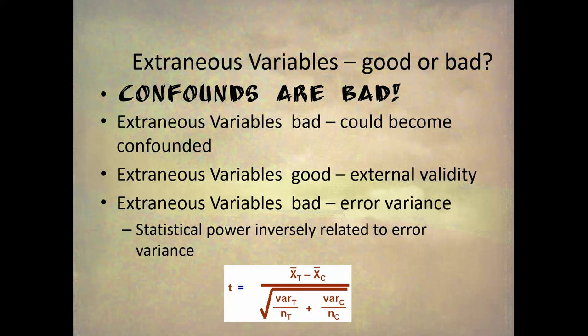One way to reduce error variance is getting rid of extraneous variables. I was running males and females in my experiment, so I dropped males and just had females, getting rid of gender as an extraneous variable. That made the population less diverse but reduced error variance, allowing me to find a statistical relationship. So extraneous variables cause more error variance, which makes it harder to find a significant effect even if it really exists.